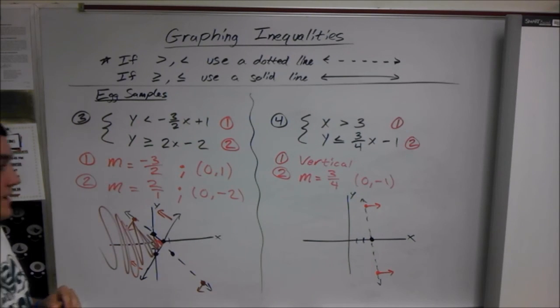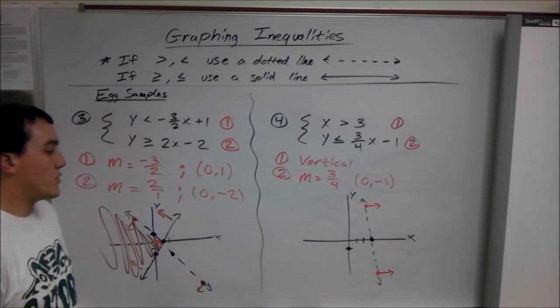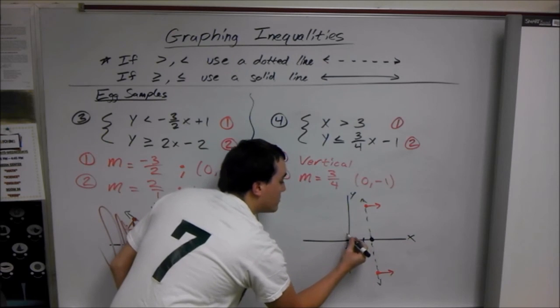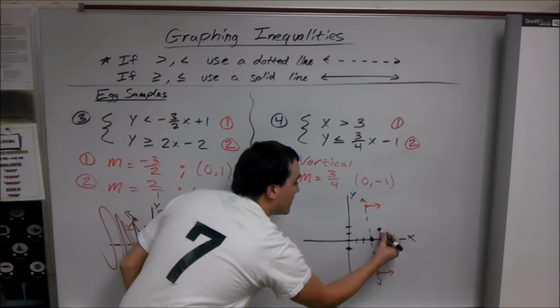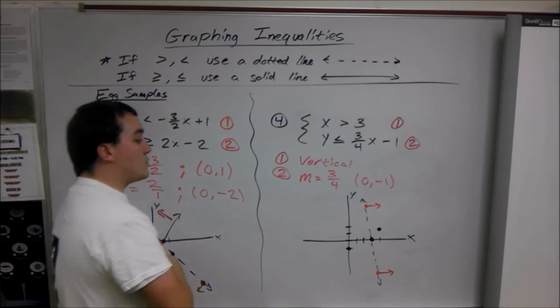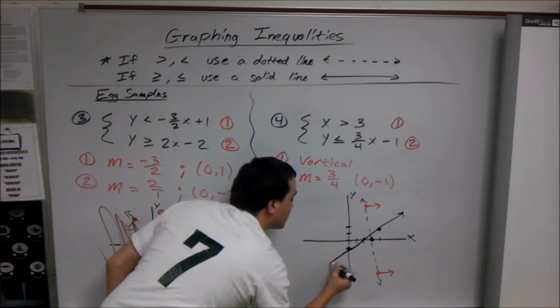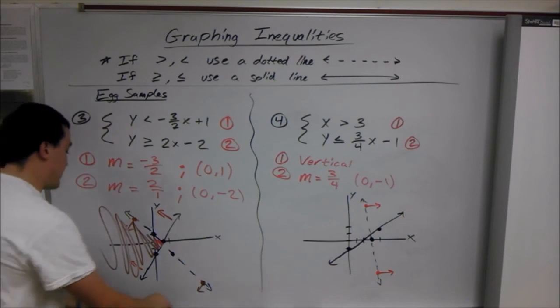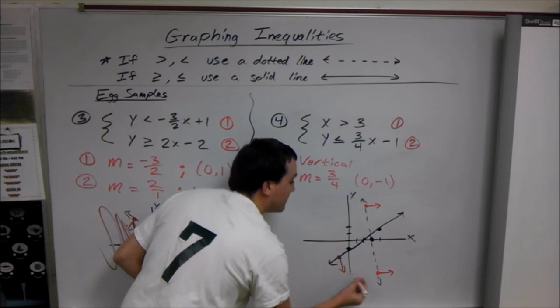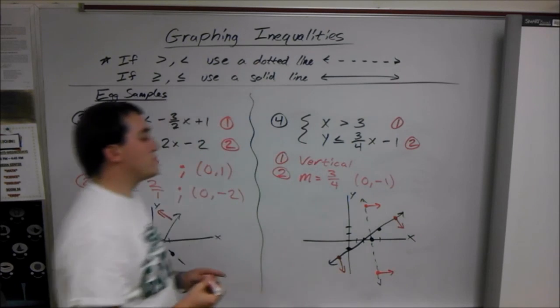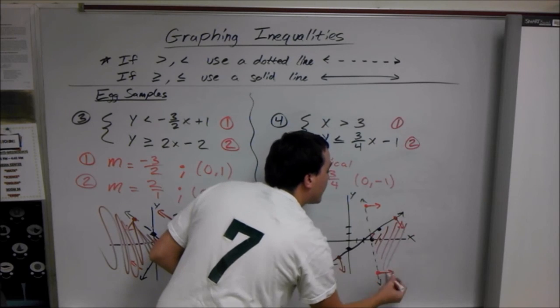And the second line starts at negative 1 on the y-axis, with a normal slope up 3 over 4. So up 1, 2, 3, over 1, 2, 3, 4. Here's our point. It's a solid line, because it's equal to. And it's less than, so it's everything. Pick a point less than that line. So wherever both the arrows are pointing, that's where you shade. So our solutions lie in this area.